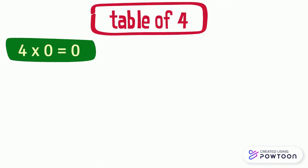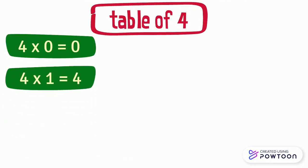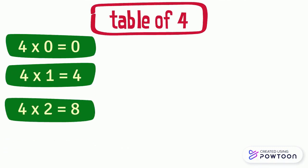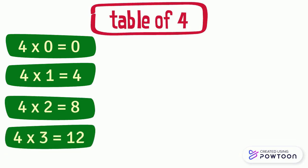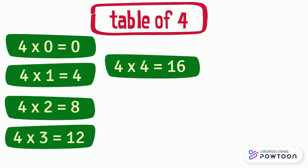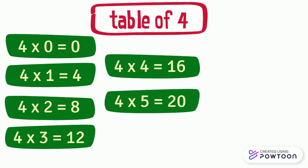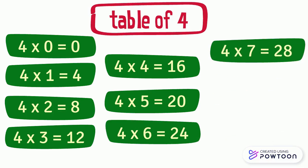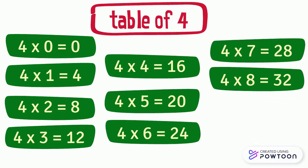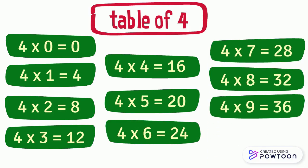You should study by heart the multiplication table of 4. 4 times 0 equals 0. 4 times 1 equals 4. 4 times 2 equals 8. 4 times 3 equals 12. 4 times 4 equals 16. 4 times 5 equals 20. 4 times 6 equals 24. 4 times 7 equals 28. 4 times 8 equals 32. 4 times 9 equals 36. And 4 times 10 equals 40.